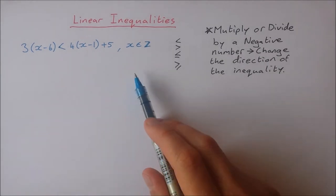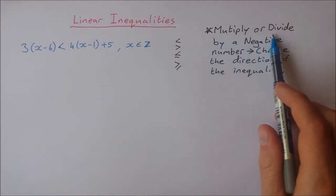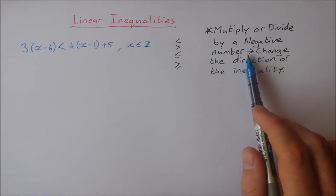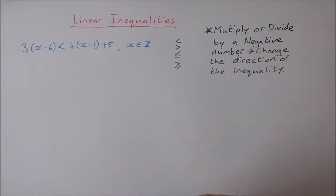Before I start a couple of examples, just an important rule that you need to know. If we multiply or divide by a negative number we must change the direction of the inequality sign. And I have a video that shows the reason why this is.